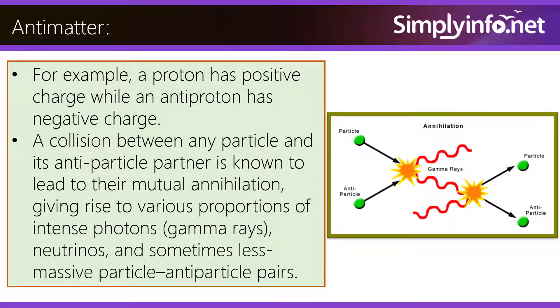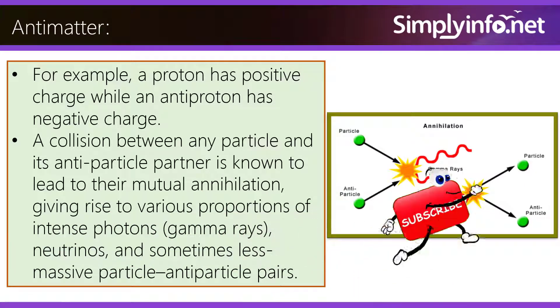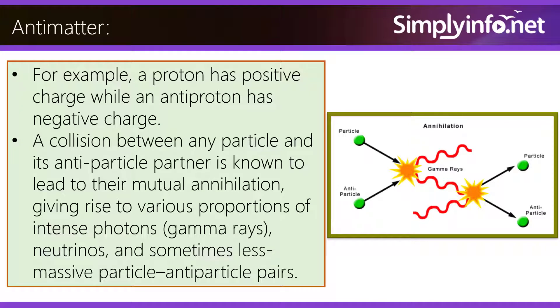For example, a proton has positive charge while an antiproton has negative charge. A collision between any particle and its antiparticle partner is known to lead to their mutual annihilation, giving rise to various proportions of intense photons, gamma rays, neutrinos, and sometimes less massive particle-antiparticle pairs.